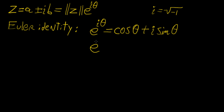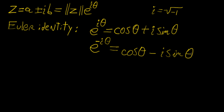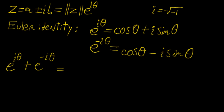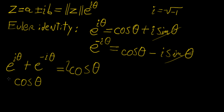If you have an exponential e to the power of minus i theta, the only thing that changes is the sign, so it becomes cosine theta minus i sine theta. There's something very interesting that happens here: if you add e to the power of i theta plus e to the minus i theta, the sine terms cancel out and you're left with two times cosine of theta. That means you can express cosine of theta as a sum of complex exponentials, and this is an expression that pops up quite often.